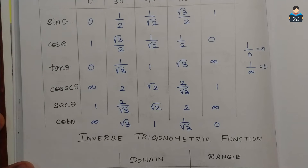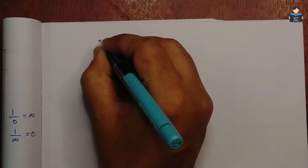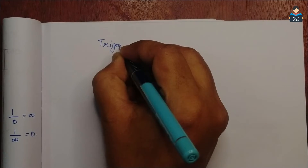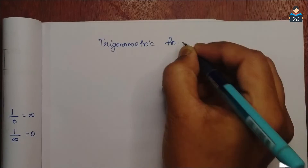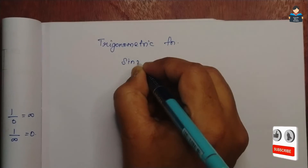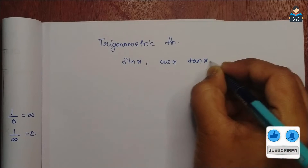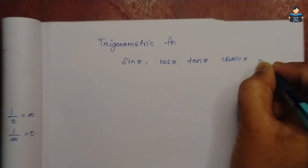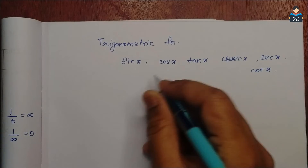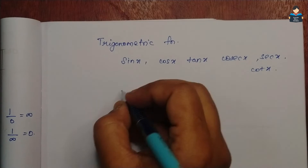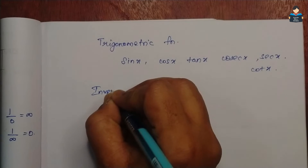Now we will talk about inverse trigonometric functions. So corresponding to the trigonometric functions sin x, cos x, tan x, cosec x, sec x, and cot x, we have their inverses.